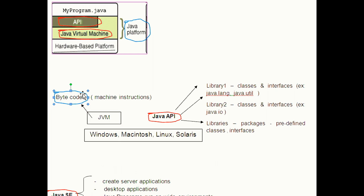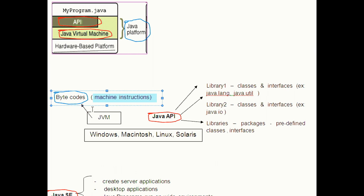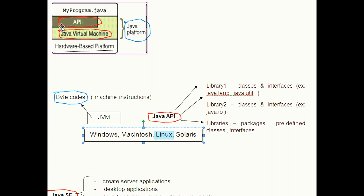The machine-independent bytecodes are not specific to either Windows, Macintosh, Linux, or Solaris operating system platforms. Machine-independent bytecodes are machine instructions for JVM. So JVM interprets the bytecode into machine code depending upon your underlying operating system platform.